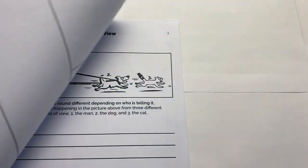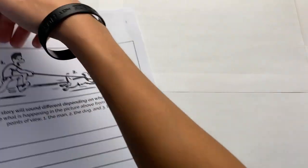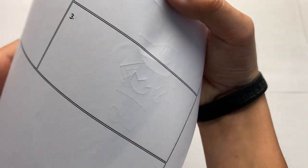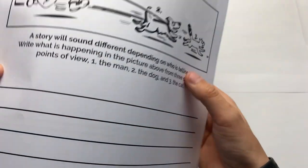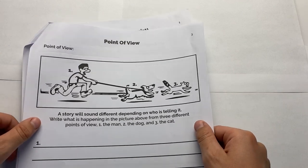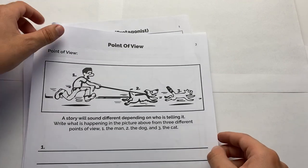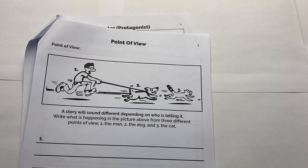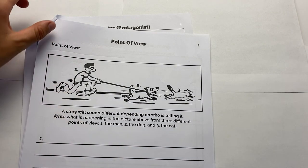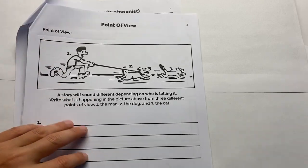Here's the rival character — the antagonist. Also, point of view: a story will sound different depending on who is telling it. Write what is happening in the picture above from three different points of view: one, the man; two, the dog; and three, the cat. So you can use point of view to make your comic too.